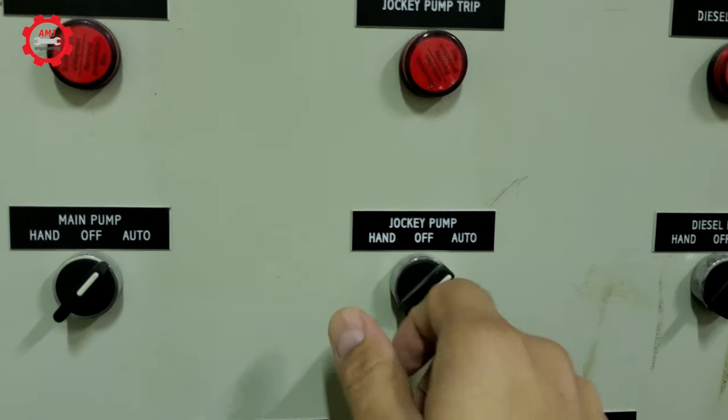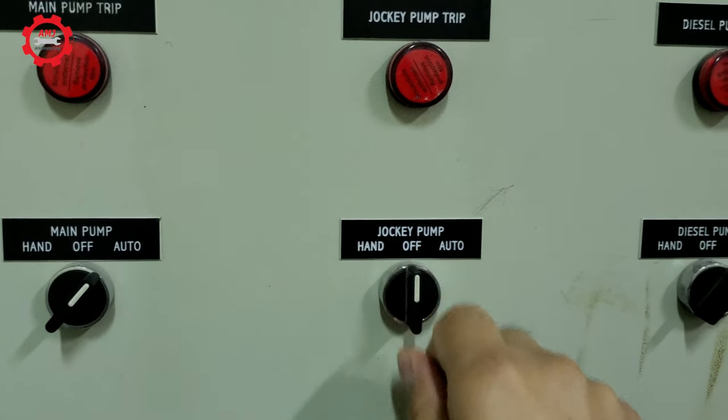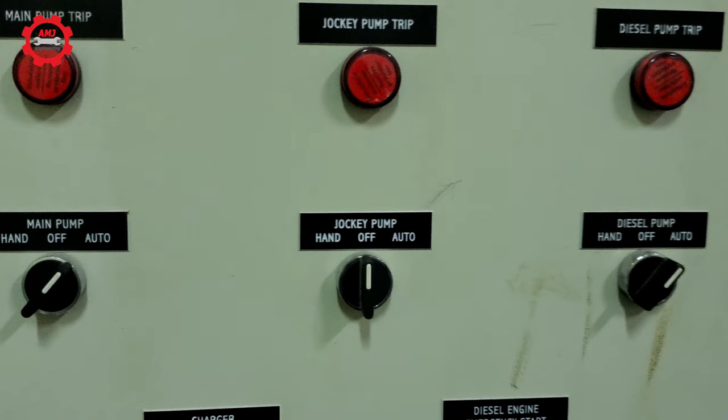Now, in order to test the main pump, I am going to turn the jockey pump controller to the off position, so that the jockey pump will not start when the system pressure decreases to 78 psi. That will allow the system pressure to decrease more and the main pump should start at 73 psi or 5 bars, as we said the start pressure for main pump is 5 psi less than jockey pump start pressure.